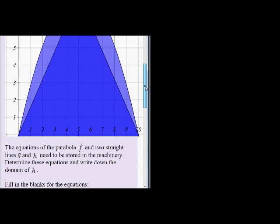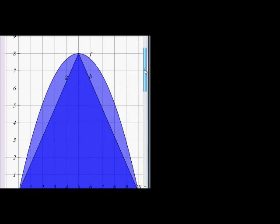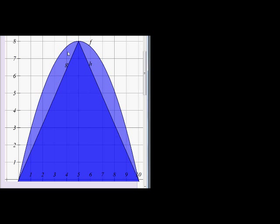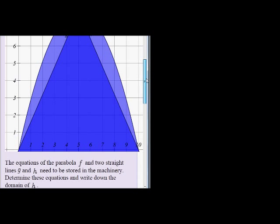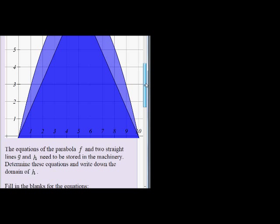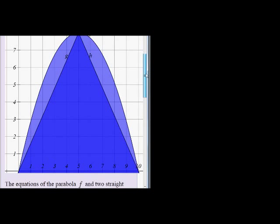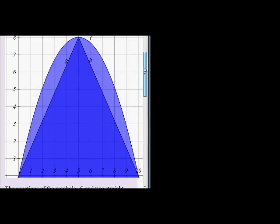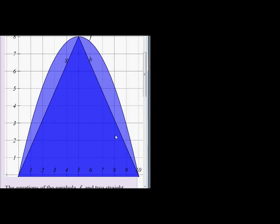We must find the equations of the parabola, that's F, and two straight lines, the straight lines are line G and line H. They're talking about equations and we know how to do equations, forget about the machinery part. Determine these equations and write down the domain of H. So we're going to determine the equations of F, of G, and of H and write down the domain of H.